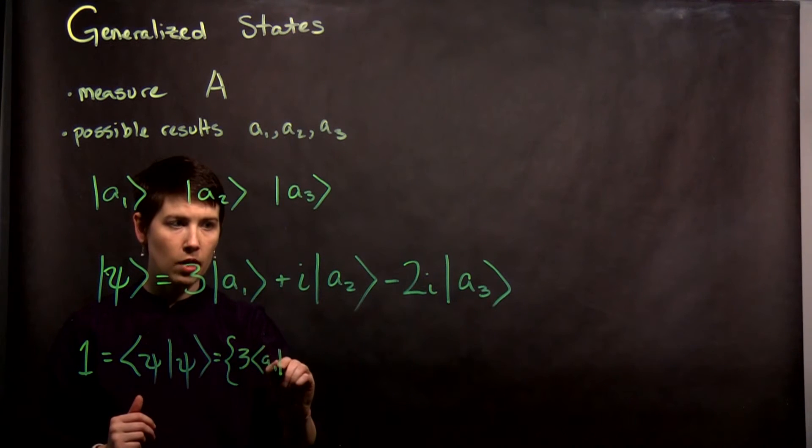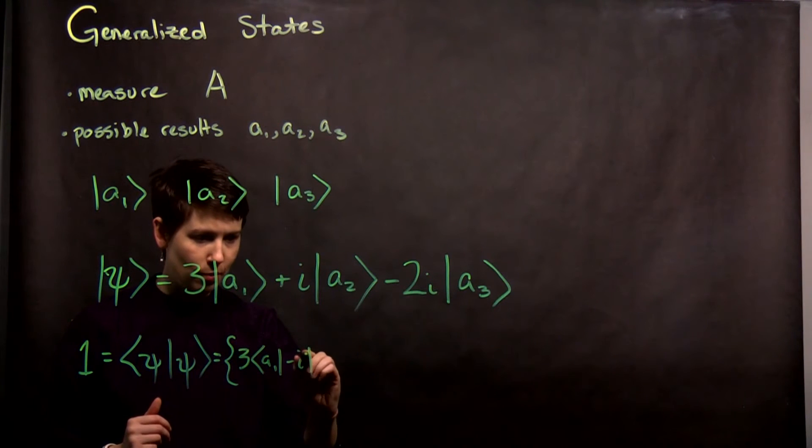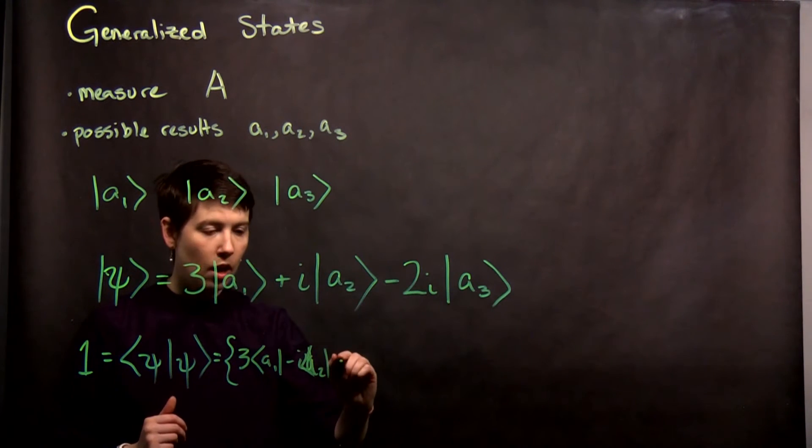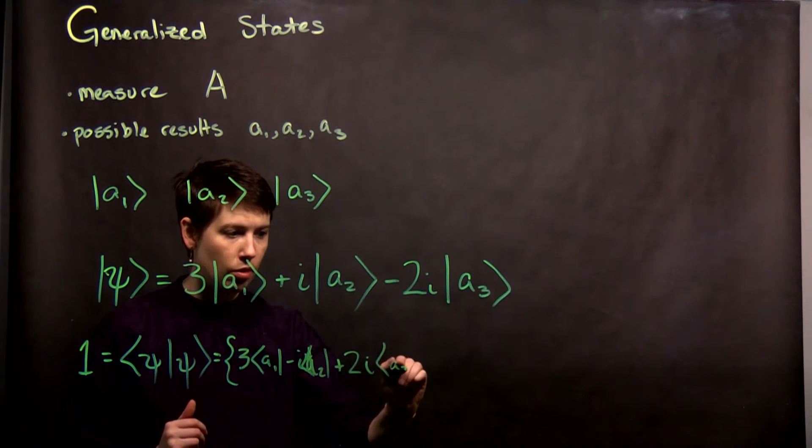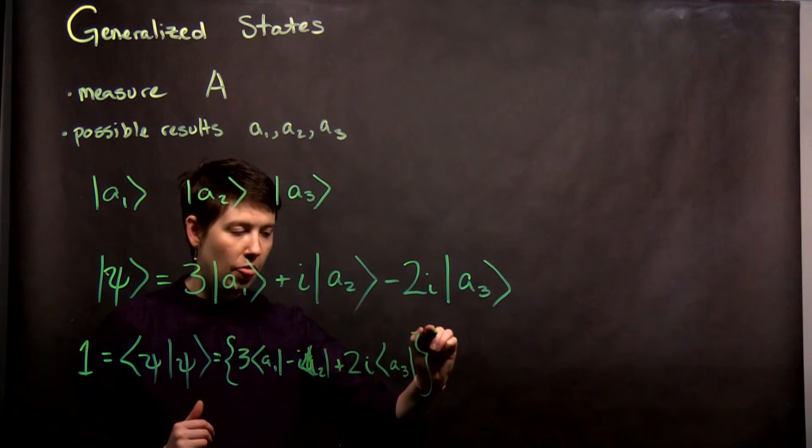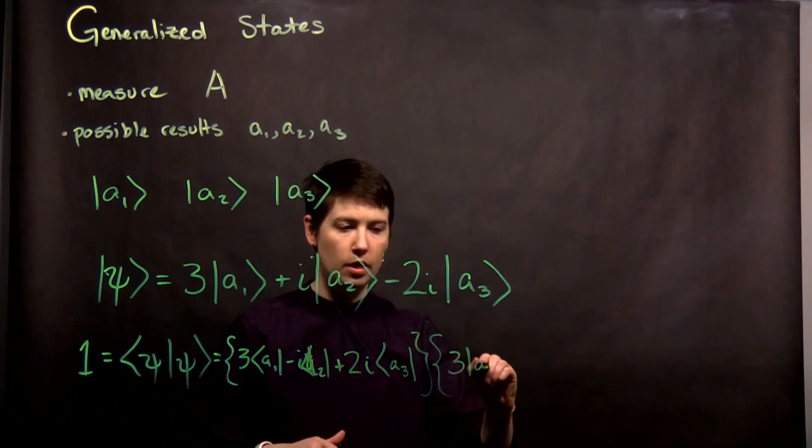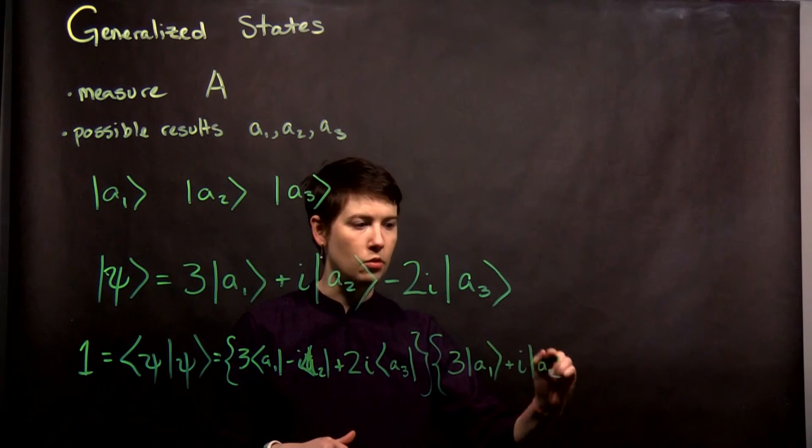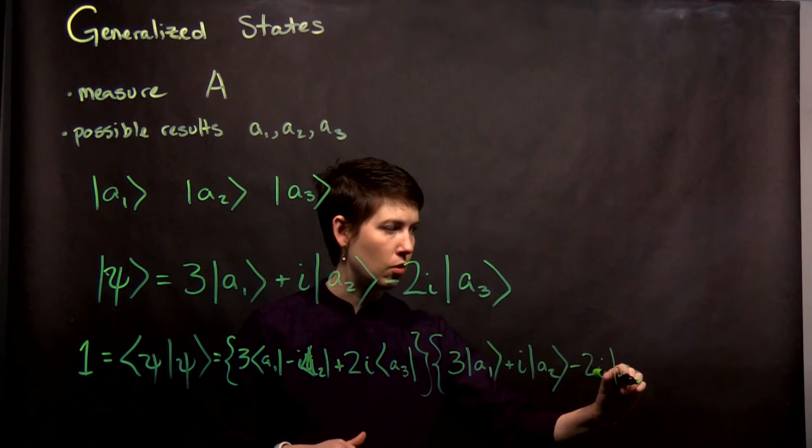So we have (3<A1| - i<A2| + 2i<A3|), that's my bra state, and that is being inner product with itself (3|A1> + i|A2> - 2i|A3>).